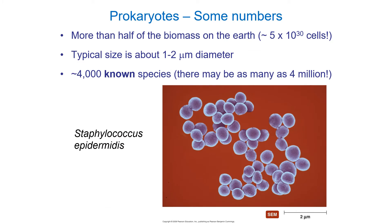Microbes are incredibly important — the vast majority are beneficial. Prokaryotes in particular are everywhere; they make up more than half of the biomass on the Earth's surface. They're in the water, the air, the soil — they're everywhere. Typically they're quite small, about one to two micrometers in diameter, although there are some exceptions.